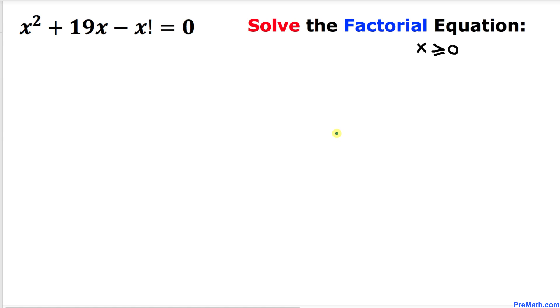Welcome to PreMath. In this tutorial we are going to solve this given factorial equation: x² + 19x - x! = 0.